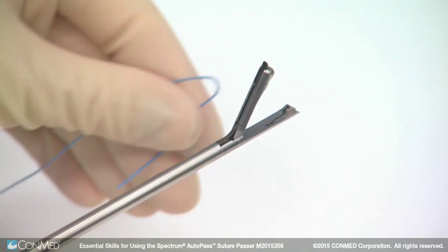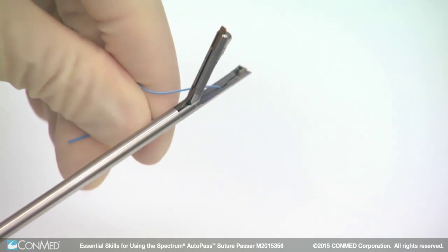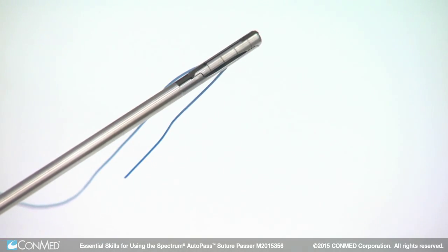For best results, load the suture from the left side with a short 2-inch tail facing down.